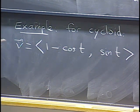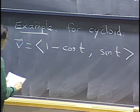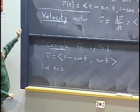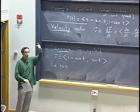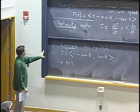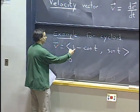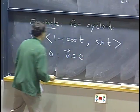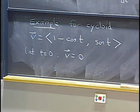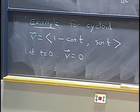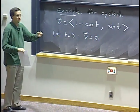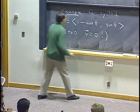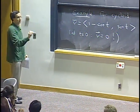The velocity vector tells us at any time how fast we are going and in what direction. Remember last time at the end of class we were trying to figure out what exactly happens near the bottom point when the motion seems to stop and go backwards. Let's understand it in terms of velocity. If I plug t equals zero, then 1 minus cosine t is zero and sine t is zero — the velocity is zero. So at that particular instant, our point is actually not moving.